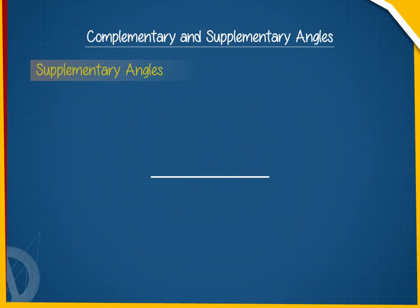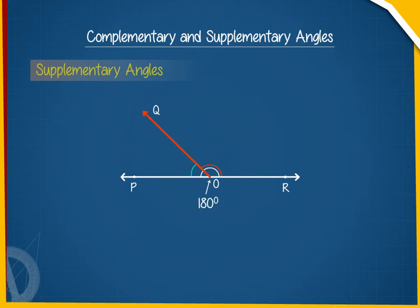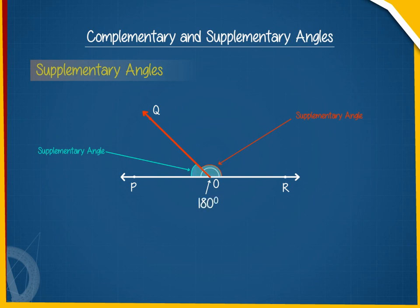Similarly, when the sum of two different angles is 180 degrees, each of the two angles is said to be a supplementary angle to the other angle. In this figure, we can see two angles with different magnitudes and a sum equal to 180 degrees. Here, angles POQ and QOR are supplementary to each other.